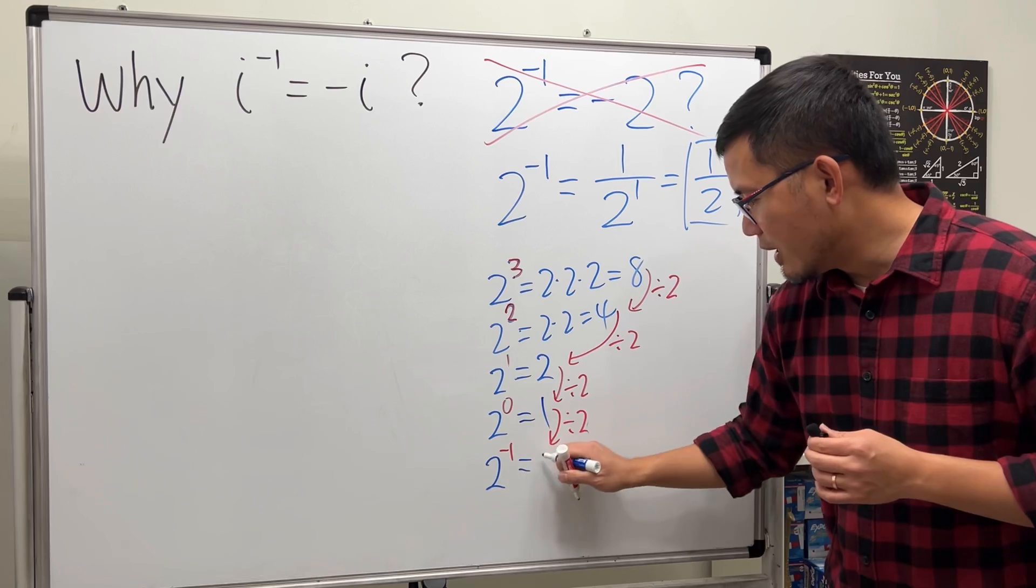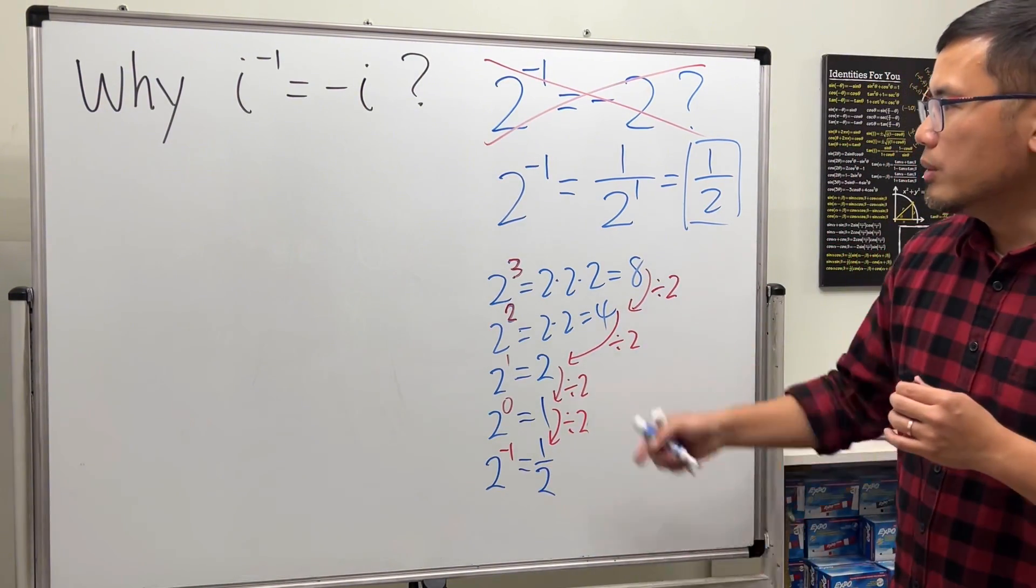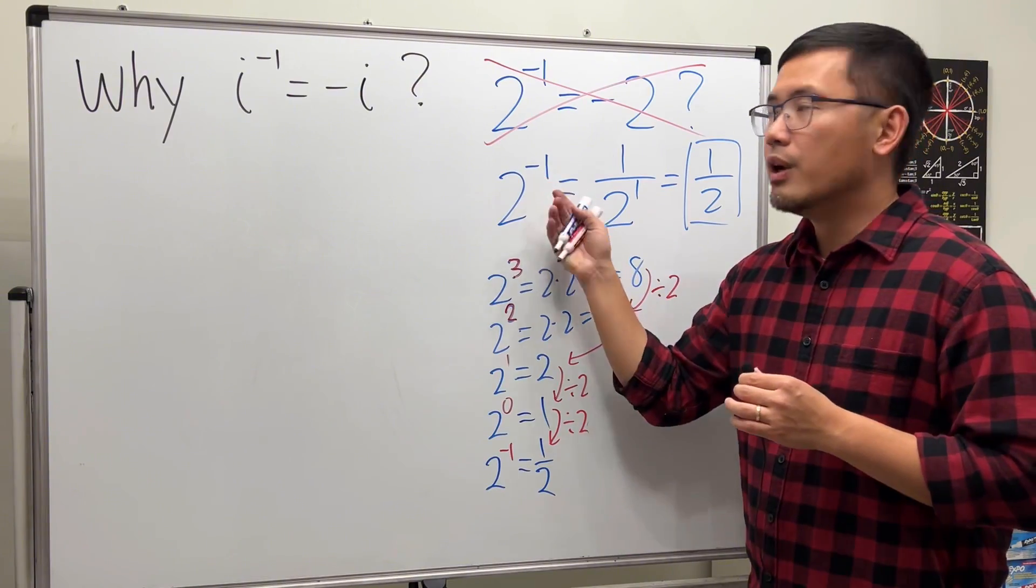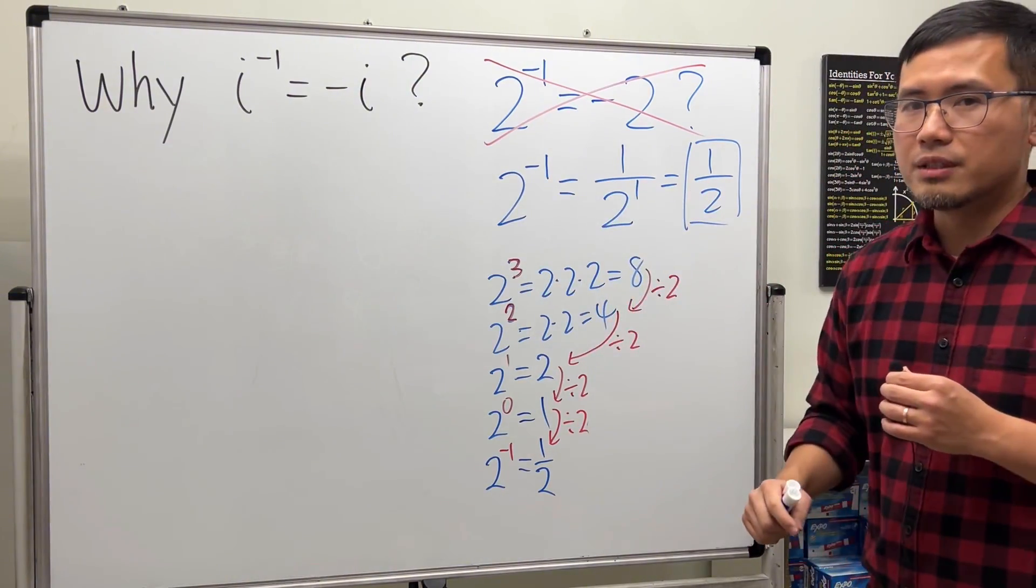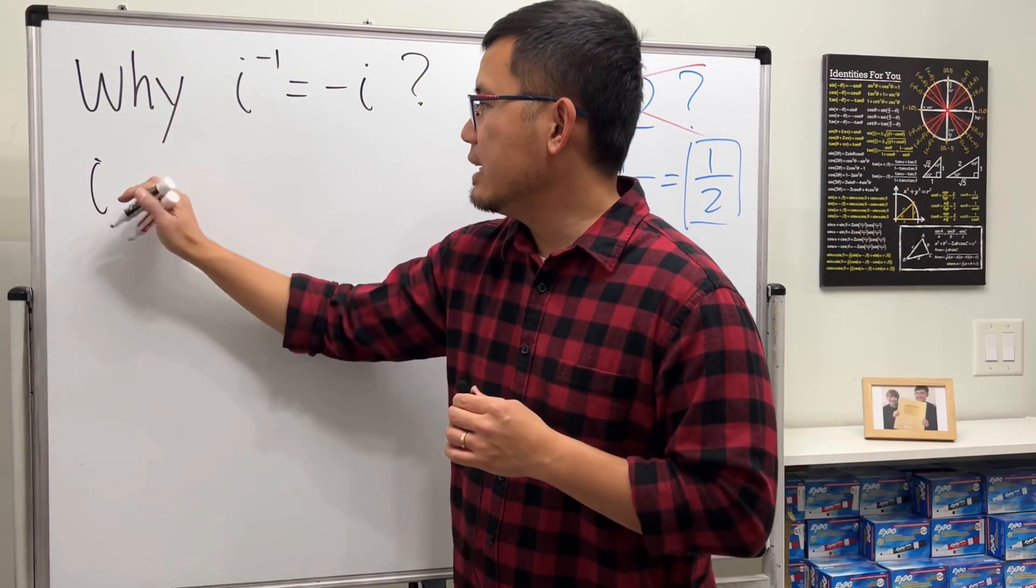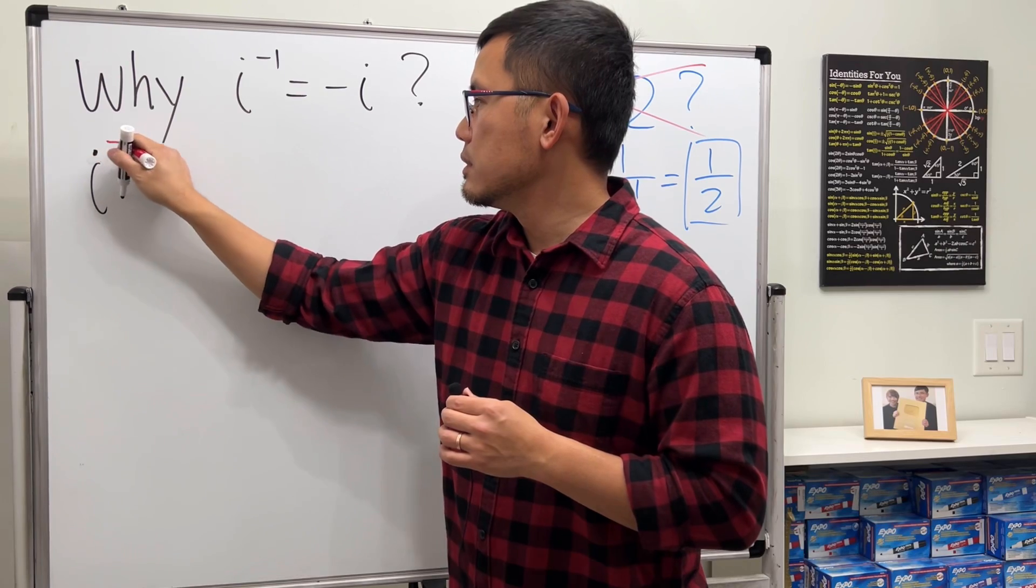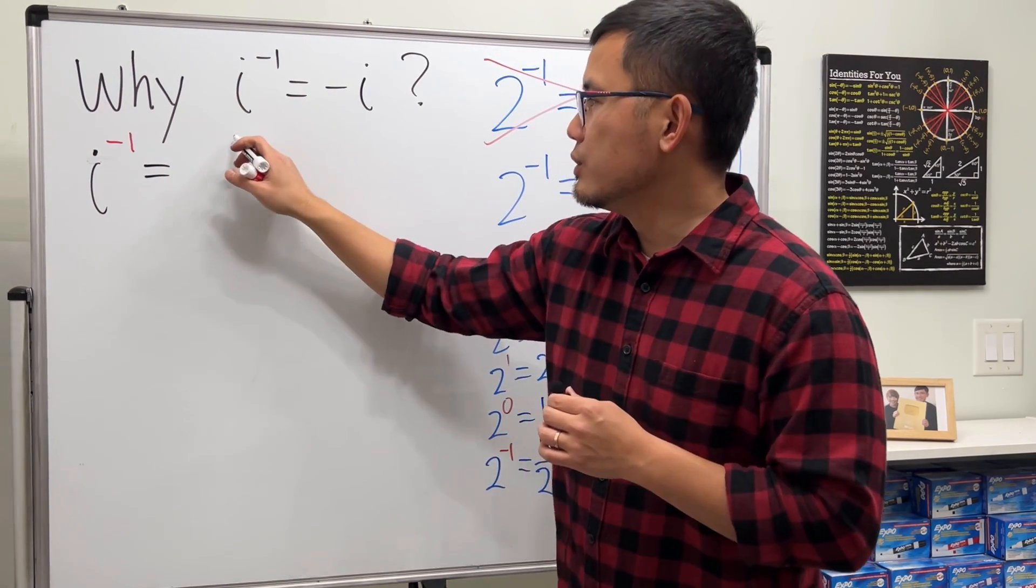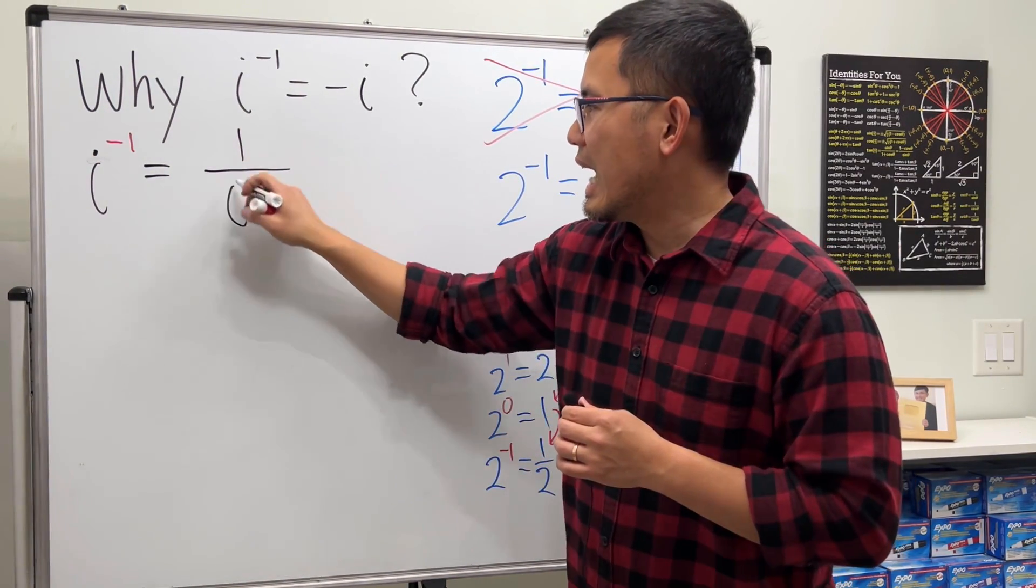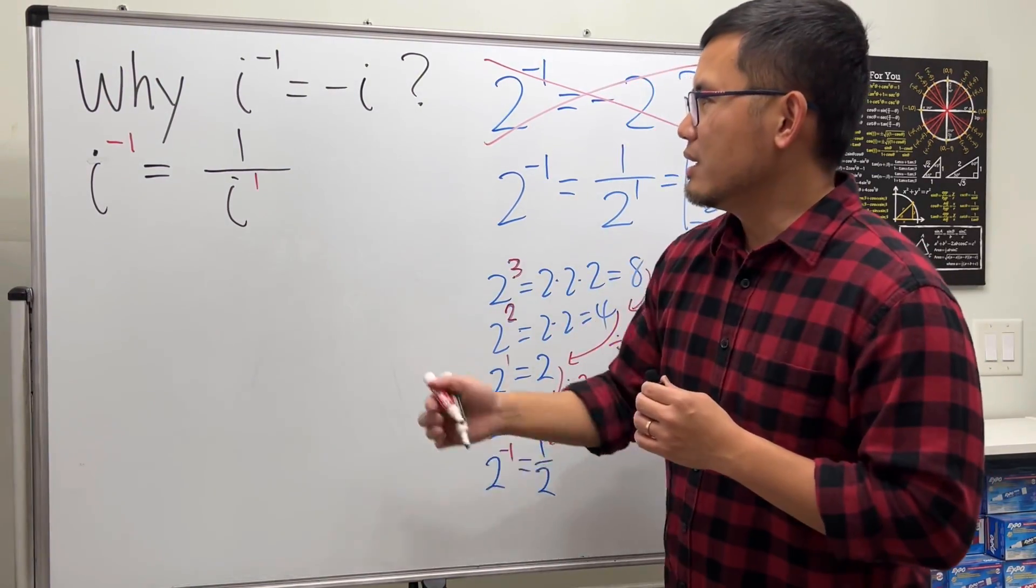Cool. In general, if you have the negative first power, you can bring that down to the denominator, and that's the key for this question. So when we have i to the negative first power, this tells you we do 1 over i to the first power. Okay, now what though?